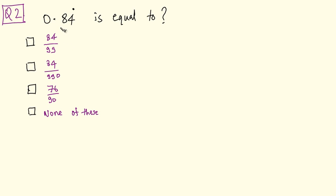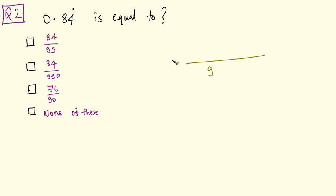The number given in this question is a mixed recurring decimal fraction. Here, 8 is non-repeating and 4 is a repeating digit. Because there is only one recurring digit, we have only one 9. And there is only one non-recurring digit, so we have only one 0. So 90 is the denominator.